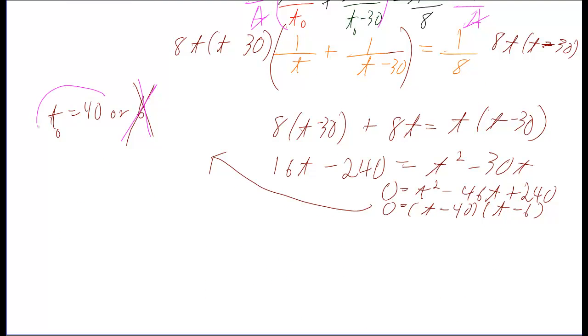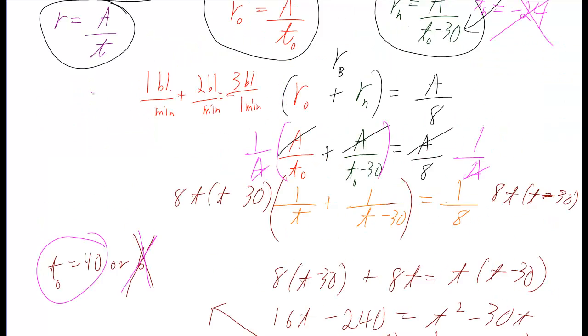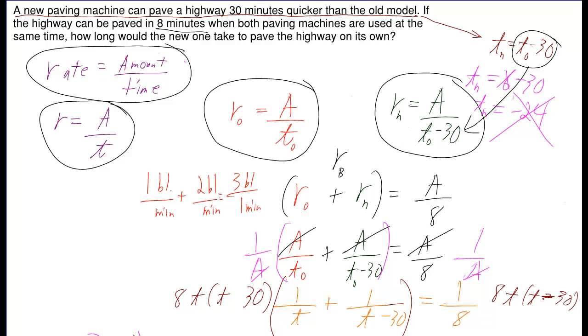So that means we're going to go with old time equal to forty, but then just pay attention to whatever your problem was asking you for. In this case, it was asking us how long would the new one take? So we're looking for TN. So forty minus thirty is ten.